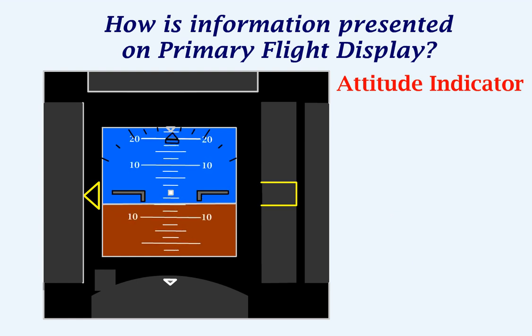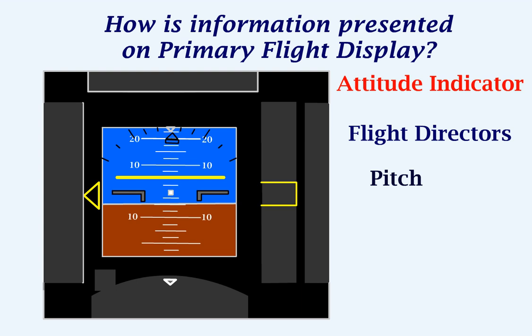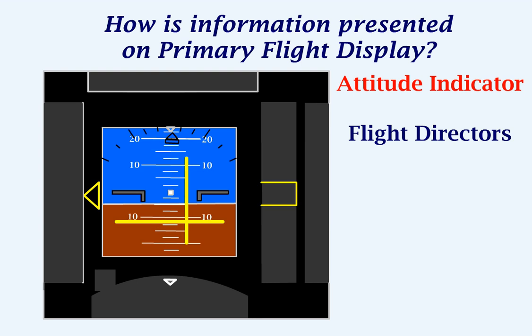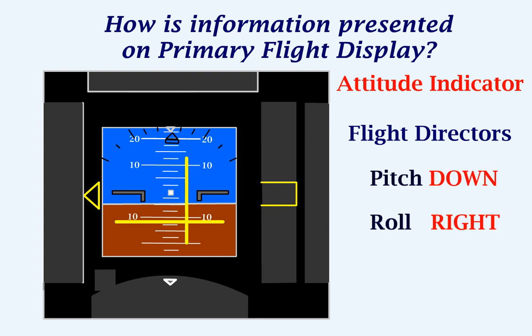The attitude indicator may also have flight directors. The horizontal line of the flight director gives the amount of pitch that the aircraft has to follow. The vertical line gives the amount of roll the aircraft has to follow. These flight directors mean that the aircraft needs to pitch up and roll towards the left. These flight directors mean that the aircraft needs to pitch down and roll towards the right.